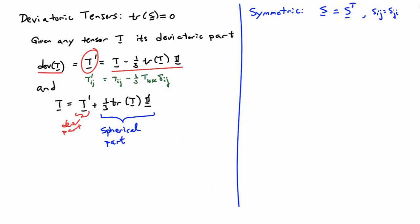Another special category are symmetric tensors — tensors equal to their transpose, meaning S_ij equals S_ji. This is completely compatible with the definition of symmetric matrices, where everything above the diagonal mirrors everything below. There are also skew-symmetric tensors, which equal the negative of their transpose: S_ij equals minus S_ji. These come up less often but are worth knowing.